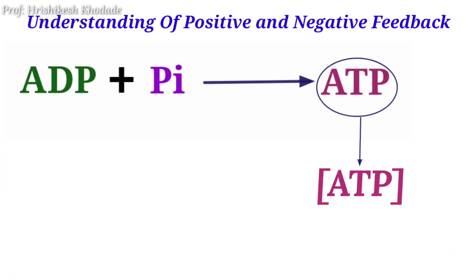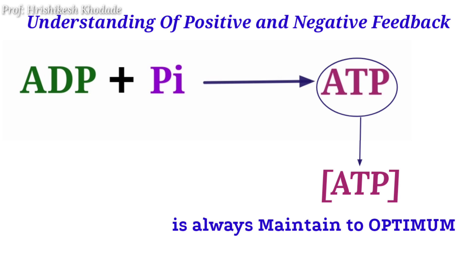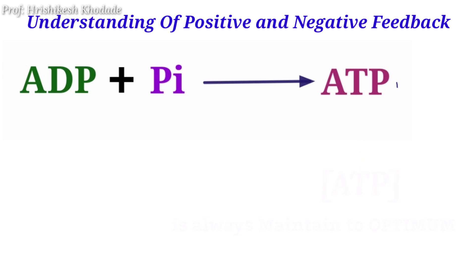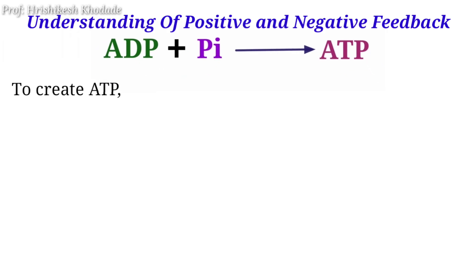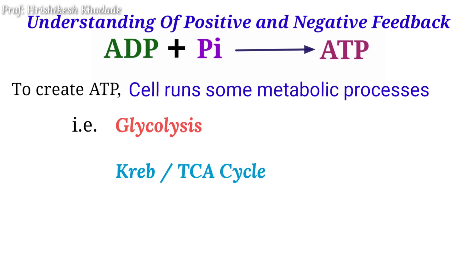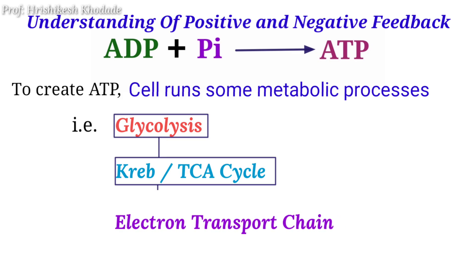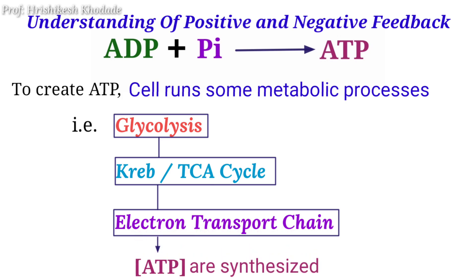This ATP concentration is maintained in every cell or body. To create ATPs, we need to run various metabolic processes such as glycolysis, which is followed by the TCA cycle or Krebs cycle, and finally the electron transport chain. So after multiple processes, ATPs are prepared inside the cell.